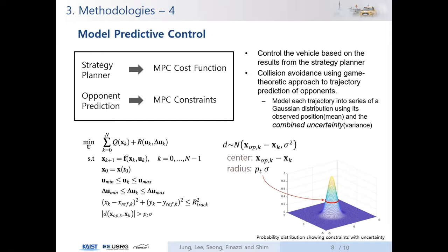The MPC controller executes actions after the high-level strategy planner has found the right cost function, and the sequential game-theoretic motion predictor has generated the opponent's future trajectories, which become the moving constraints for every time step. We set the MPC constraint to account for uncertainties by modeling each opponent's future trajectory as a series of Gaussian distributions, using the observed position and combined uncertainty as mean and variance sigma. The sources of combined uncertainty include sensing and the control law used by opponents, and the decision variable is the confidence interval that decides the radius of the constraint circle.